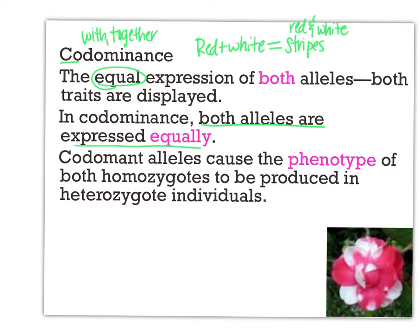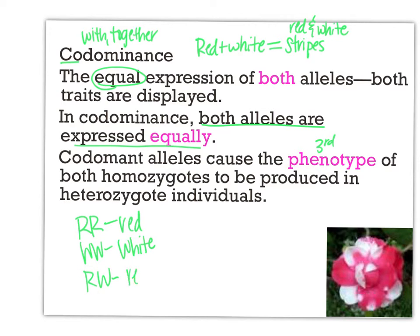Co-dominance also produces a third phenotype in the heterozygous individual. Big R big R would still be red, big W big W would still be white, and they're both dominant so you still use all capital letters. But RW would be red and white stripes or polka dots or checkers. If you can see full red and full white — or full black and full white like a zebra — that would be co-dominance.